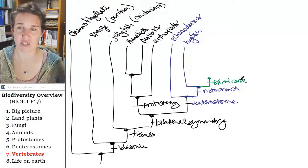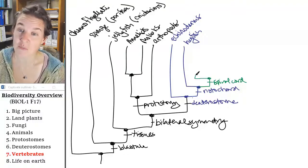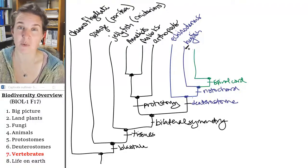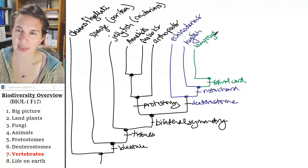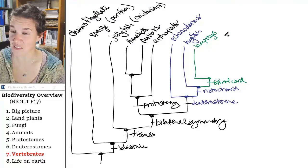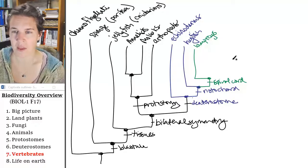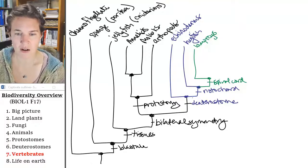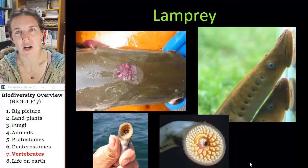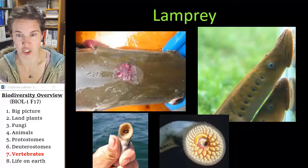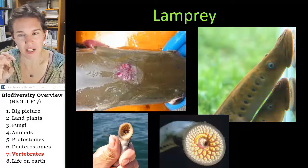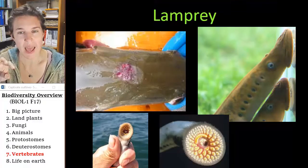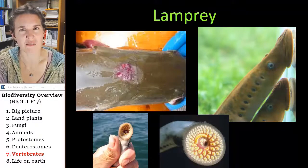So vertebrates have vertebrae. They have this vertebral column, and our first most basal group of vertebrates are lampreys. And they look like eels, but I'm going to show you a picture of them. Those guys are crazy cool. They're a parasitic fish-ish thing that's not a fish because it's a lamprey, and it actually attaches itself to a fish and sucks its blood. Awesome.